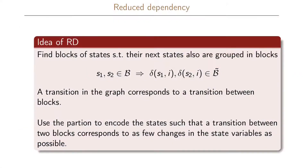Now we will look at something called reduced dependency. Reduced dependency is a way of performing the state assignment such that it heuristically gives us a good state assignment and in the end a small realization. The idea of reduced dependency is to find blocks of states such that their next states also are grouped in blocks.